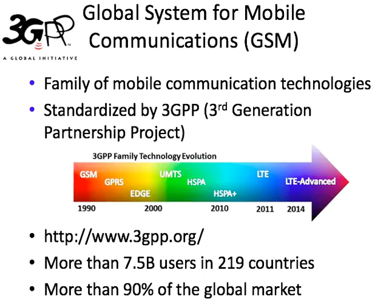So what is GSM? GSM stands for the Global System for Mobile Communications. It's really a family of mobile communication technologies that has evolved over time. GSM has been around since the 1990s, but has evolved into what are known as 3G and 4G technologies, such as UMTS and LTE. UMTS is the Universal Mobile Telecommunications System, and LTE is the Long-Term Evolution. GSM is known as a 2G technology and was the first digital mobile telephony technology to come onto the market.